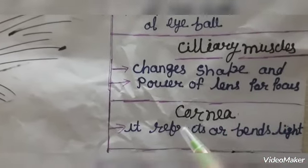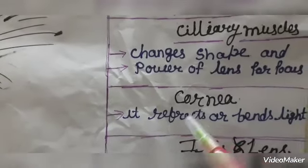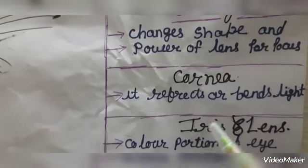Cornea refracts and bends light. Cornea reflects light and can bend it.